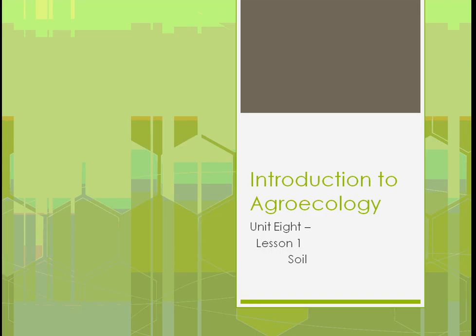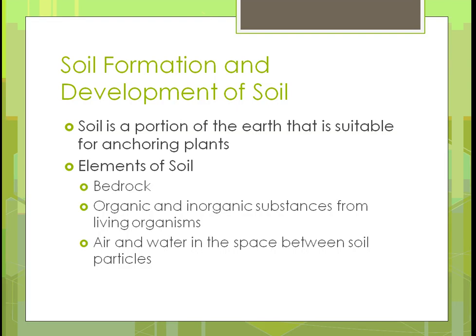We're going to start out by looking at lesson one for soil in unit A: soil formation and development. By definition, soil is a portion of the earth that is suitable for anchoring plants. In other words, we can put a plant in the ground and it's the right type of material that it will grow in, nourish, and be a productive plant.